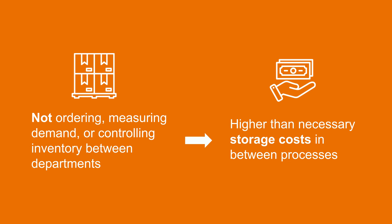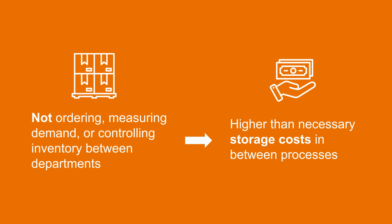Some of the common mistakes could include not ordering, measuring demand, or controlling inventory between departments, which could result in higher than necessary storage costs in between processes.